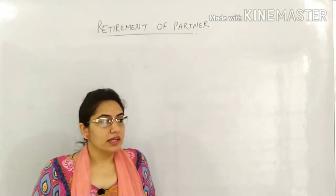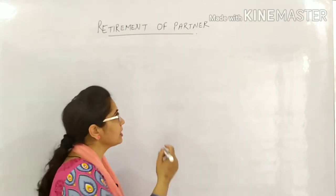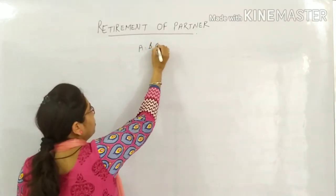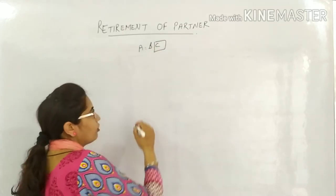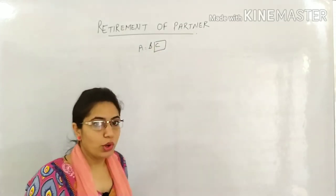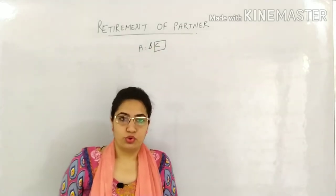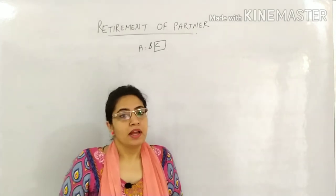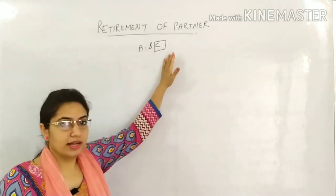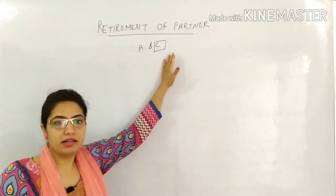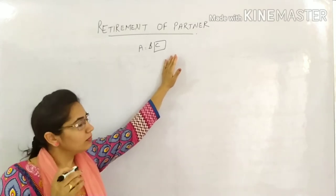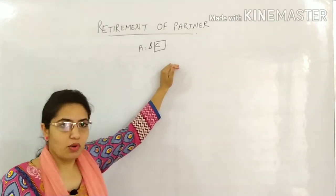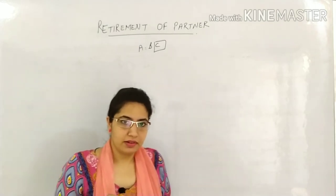Suppose we have three partners and due to bad health, one wants to quit the company. She can do so by giving a prior notice. And when an existing partner leaves the firm for any reason, then it is called retirement of a partner.